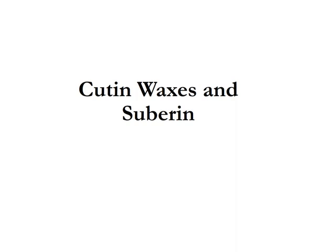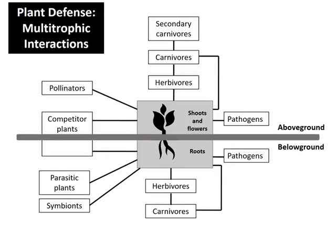In this lecture we will be discussing cutin, waxes, and suberin. These are compounds which help in plant defense against different herbivores, pathogen attack, or different types of biotic and abiotic stresses. In the last lecture we learned about herbivory — the eating of plants by some insects and other microorganisms. Plants face pathogen attack and several abiotic stresses such as drought and salinity, and biotic stresses such as microorganisms which hamper the growth of plants.